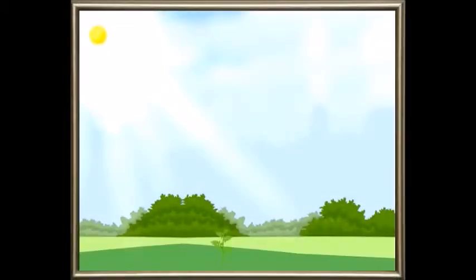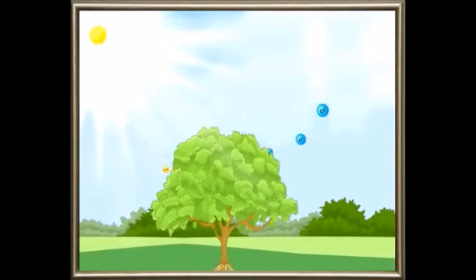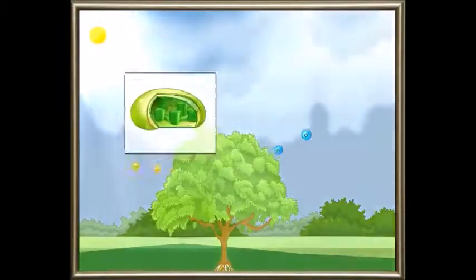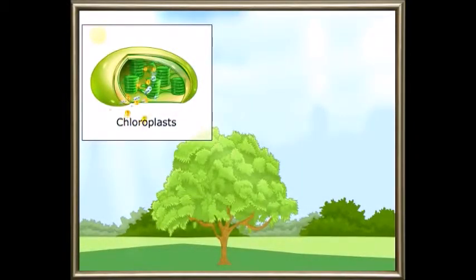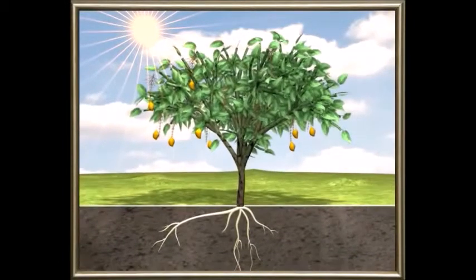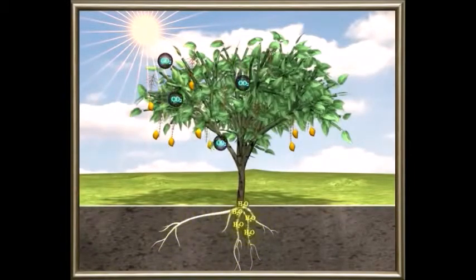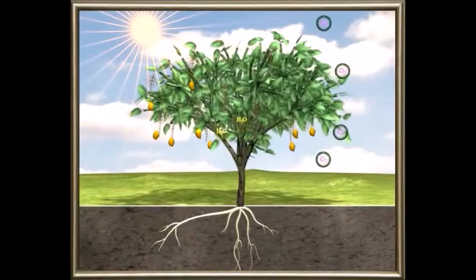Plants prepare food in the chloroplasts present in the green leaves, with the help of sunlight, water, and carbon dioxide. Water and carbon dioxide are supplied to the chloroplasts for this process to take place. Plants use this food for their own metabolic activities, and the rest is stored in different parts of the plant.